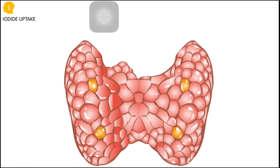The first step is iodide uptake, the second step is oxidation of this iodine, the third step is coupling, and the fourth step is the release of the formed thyroid hormones into the bloodstream.